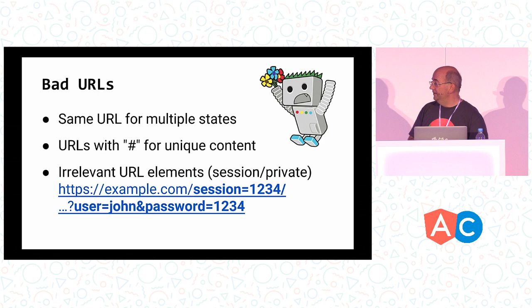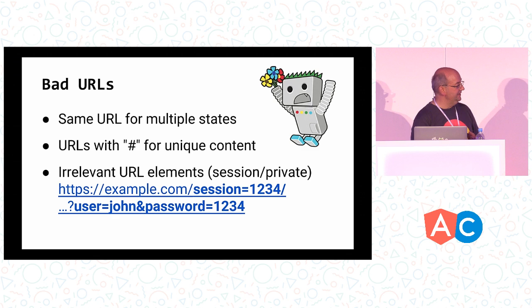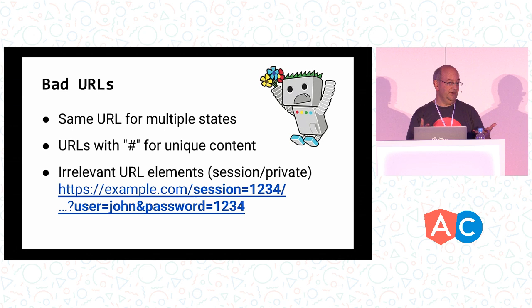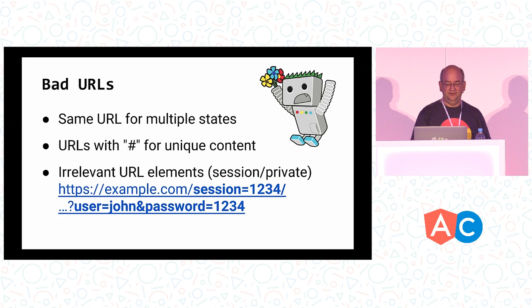Another anti-pattern is irrelevant URL parameters. Session IDs used to be really common. Something we still sometimes see is URLs containing login information or any kind of private information. It's not that we'll go out and find these URLs, but they may show up in search — and then suddenly there's an article about doing a weird Google search to find login information for that website. So that's something to avoid.